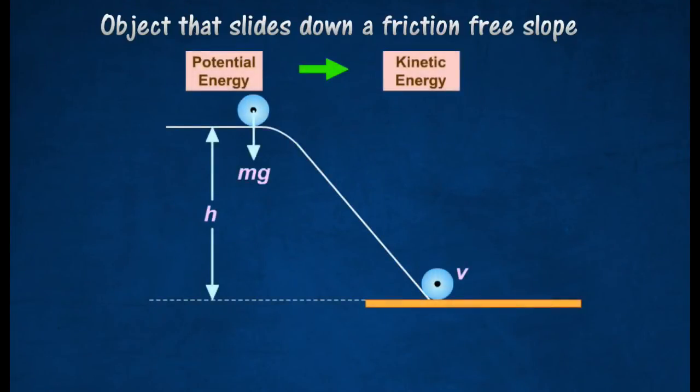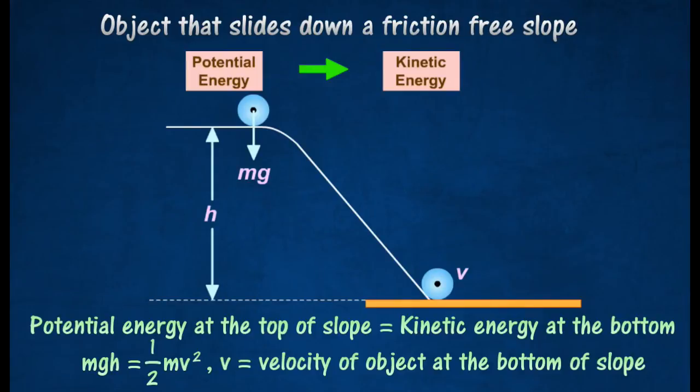For an object that slides down a friction-free slope, its potential energy at the top of the slope is equal to its kinetic energy at the bottom.